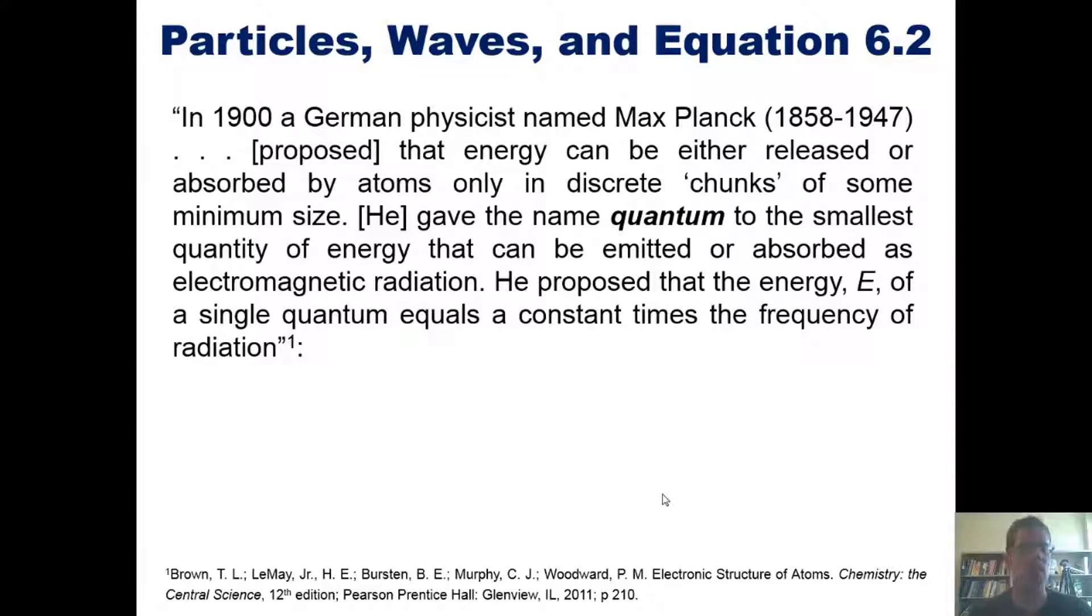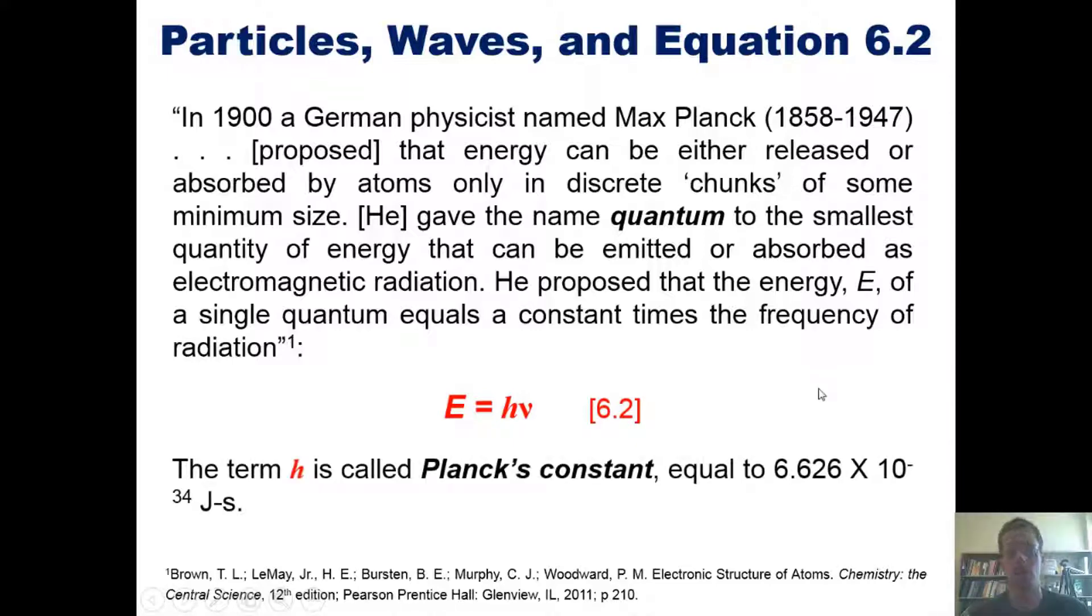In 1900, a German physicist named Max Planck proposed that energy can either be released or absorbed by atoms only in discrete chunks of some minimum size. He gave the name quantum to the smallest quantity of energy that can be emitted or absorbed as electromagnetic radiation. He proposed that the energy E of a single quantum equals a constant times the frequency of radiation according to this equation: Energy equals H times frequency. This term H is called Planck's constant, which happens to be equal to 6.626 times 10 to the negative 34 joules times seconds.